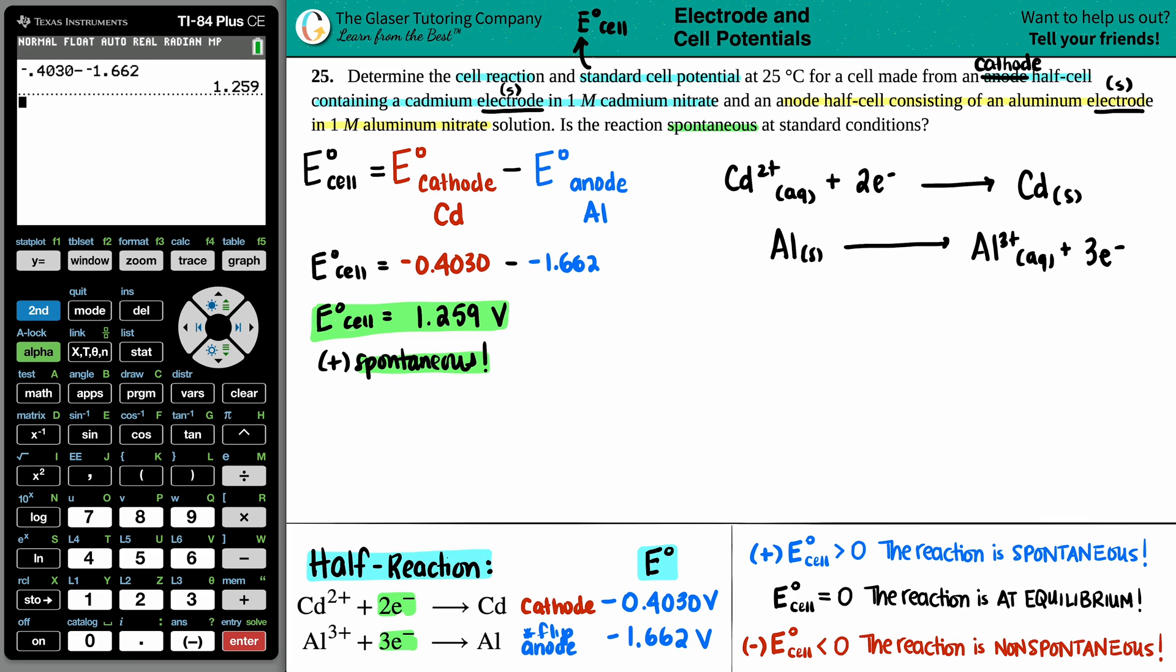So anything that's on the right-hand side is going to be on the left. Anything that's on the left-hand side is going to be on the right. So I'm going to start off with the aluminum solid, and I'm going to go to the Al³⁺, that's aqueous, and the 3e⁻. Now in order for me to put these two equations together, I need to make sure that those electrons are balanced, but they're not right now. But what's the next number by multiplying that goes with two and three? Yeah, six.